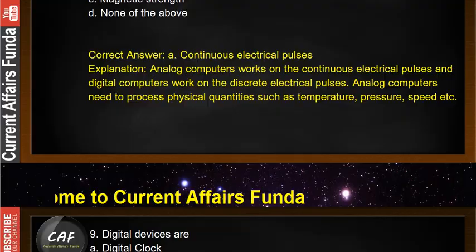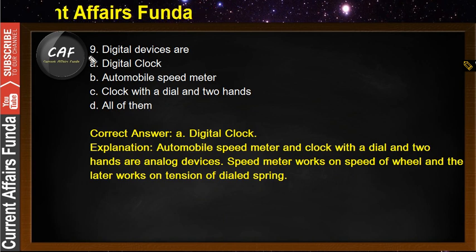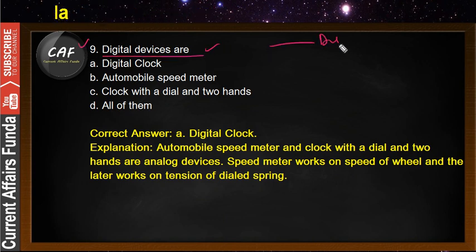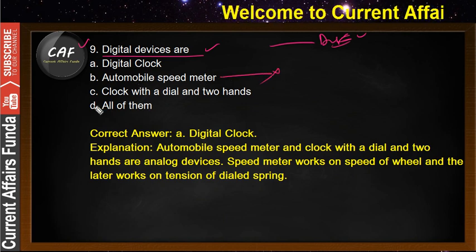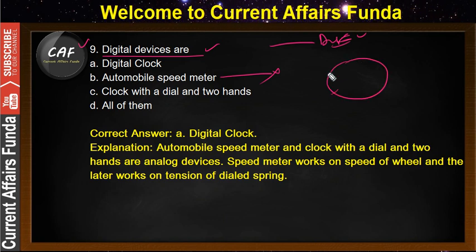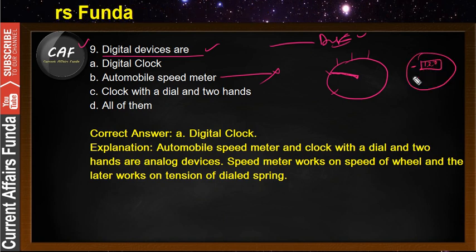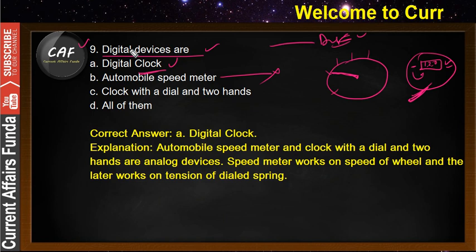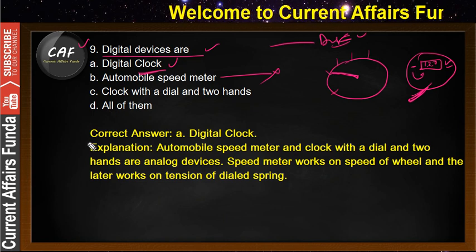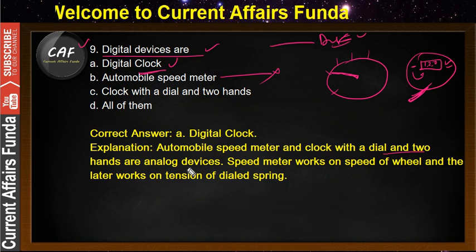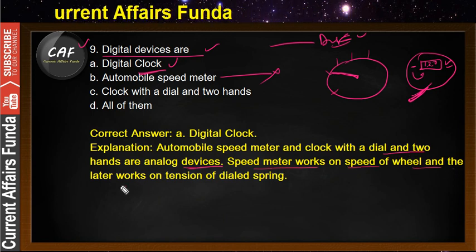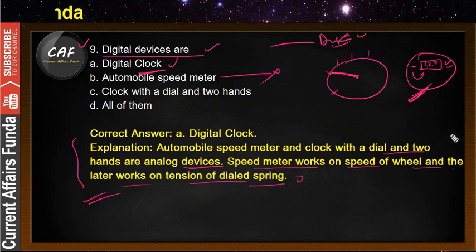Problem number 9: what are digital devices? An automobile speed meter with a needle is not digital. A digital clock is the best example of a digital device. In new bikes, you get digital meters — those are digital. The automobile speedometer and a clock with a dial and two hands are analog devices. The speedometer works on the speed of the wheel and the clock works on a tension spring. Digital devices are best represented by the digital clock.